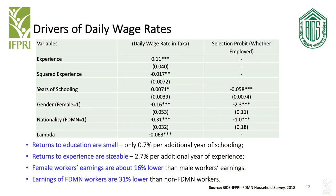We also estimated the Mincerian wage equation with Heckman selection to assess the return to education and return to experience. We found that the return to education is positive but very small — only 0.7% with each additional year of education. However, the return to experience is relatively more sizeable: every additional year of experience leads to a 2.7% increase in the wage rate. Female workers' earnings are about 16% lower than their male counterparts, and FDMN workers' earnings are about 31% lower than host community workers.